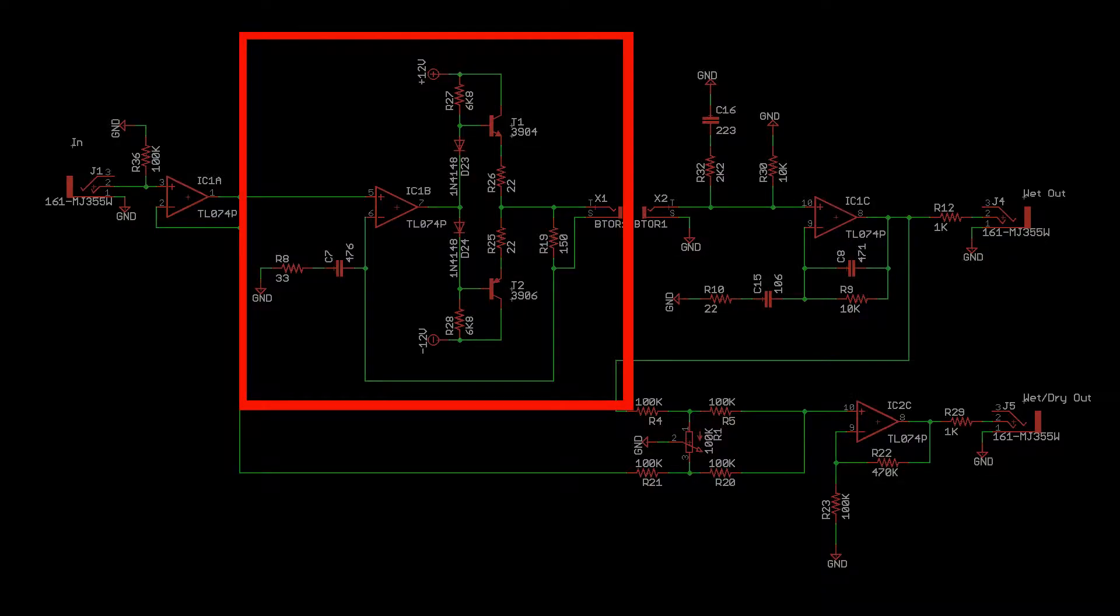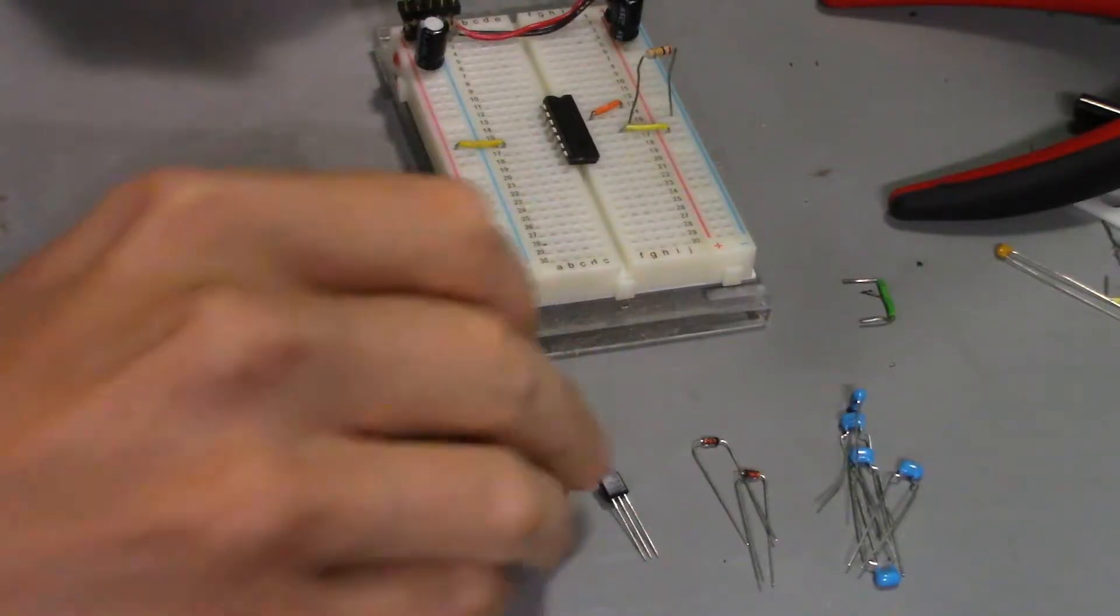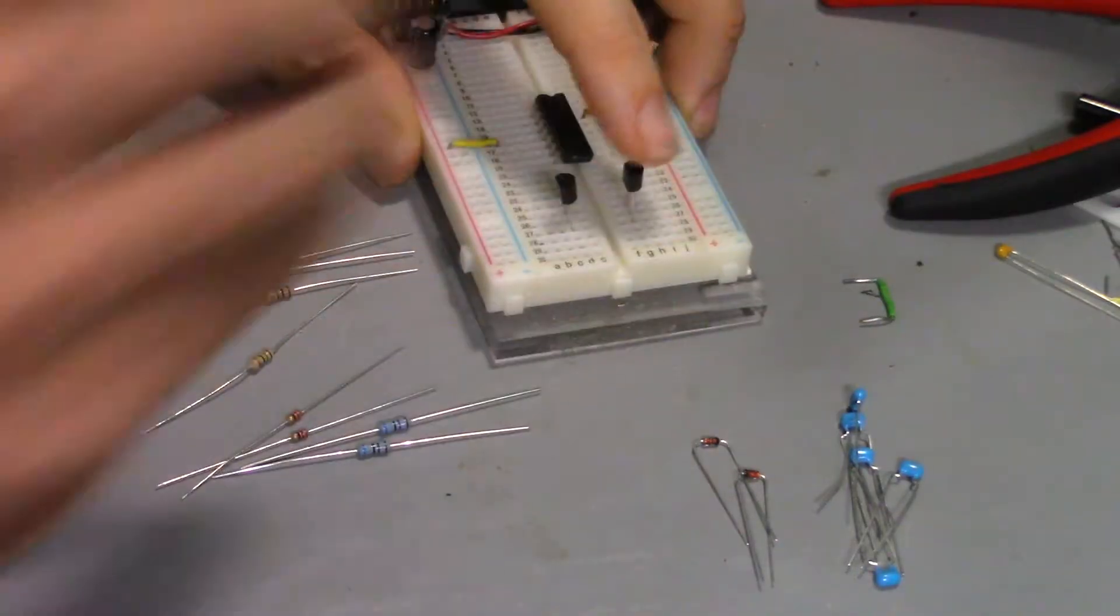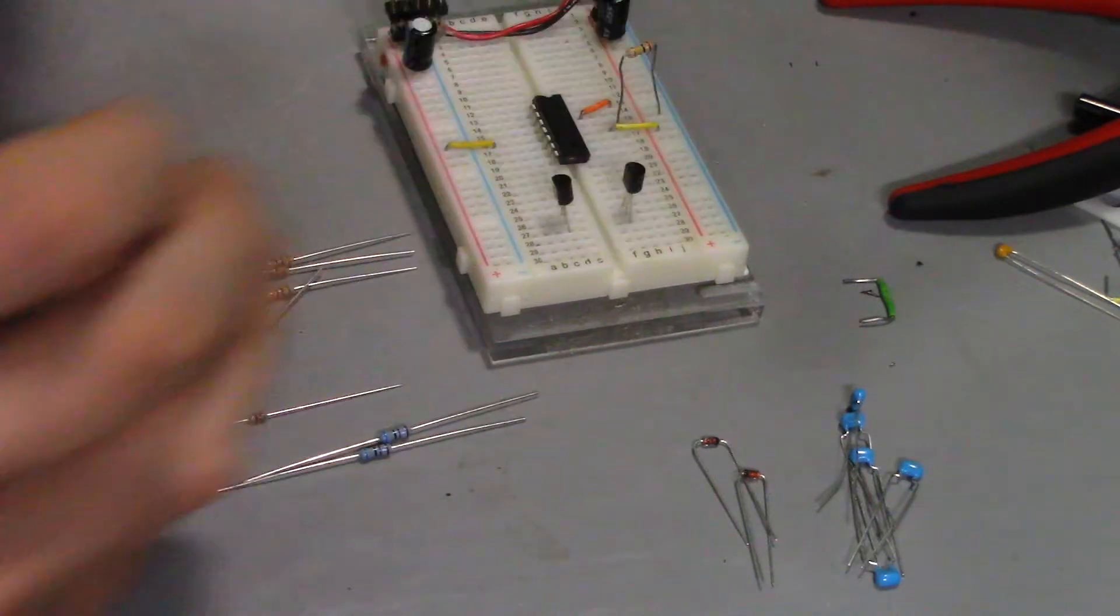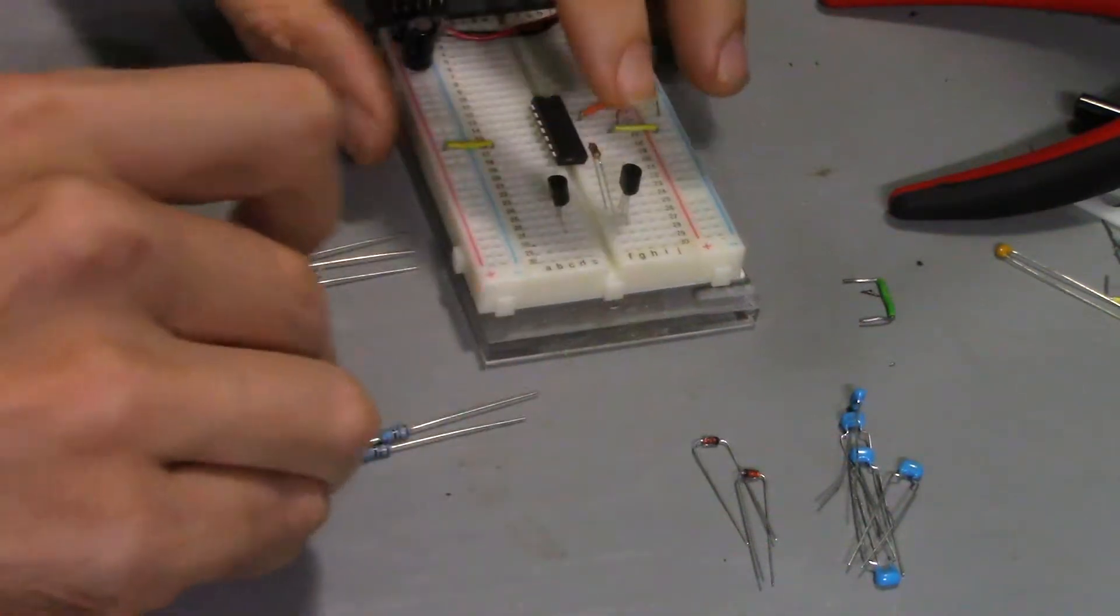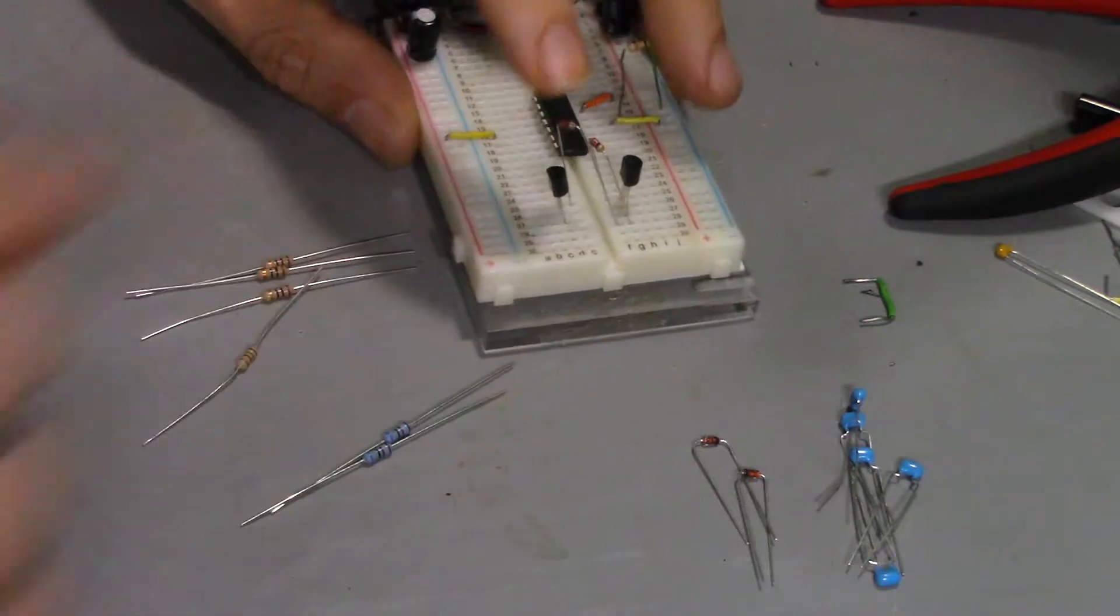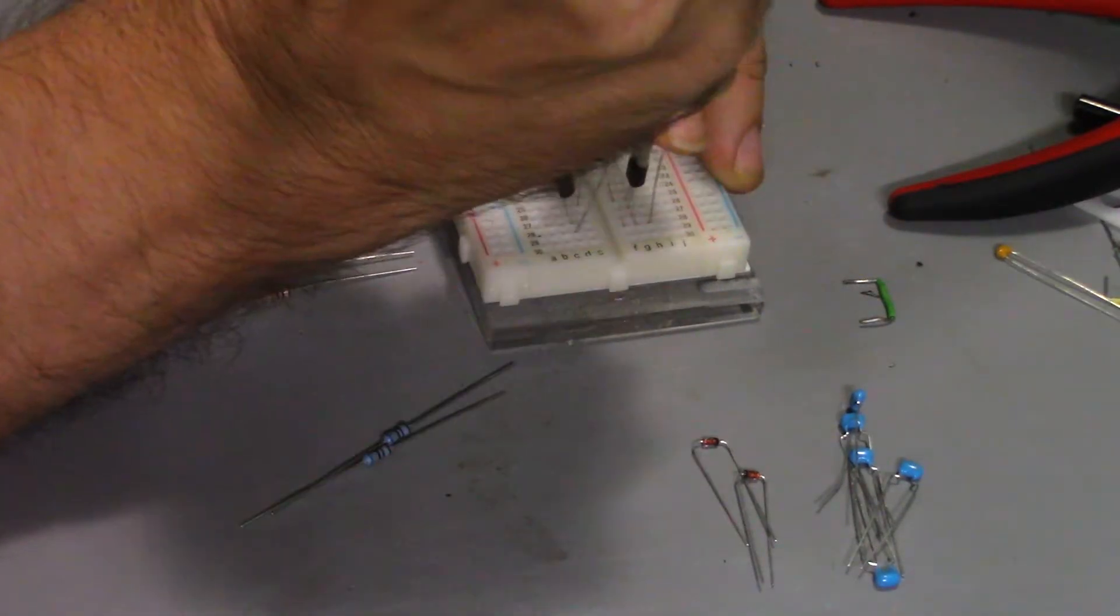Now for the power stage. If it looks like there are more parts than needed, you'd be correct. If you don't have the exact value of a capacitor or resistor, it can usually be made by adding the appropriate parts in series or parallel.